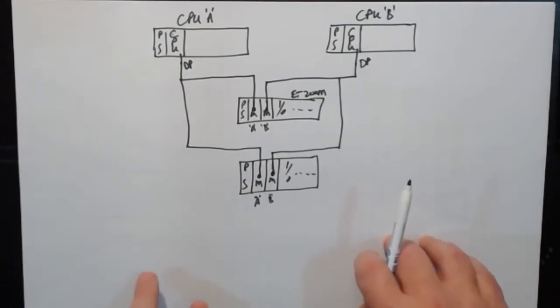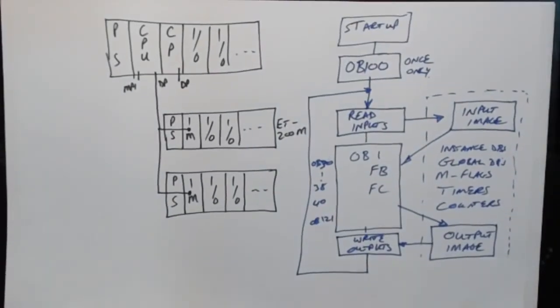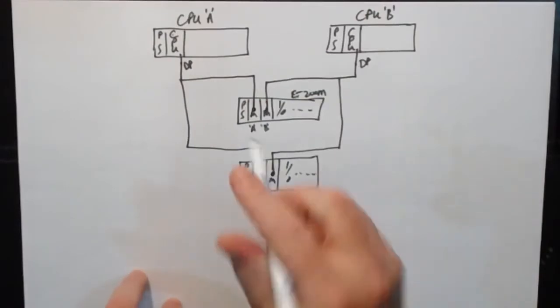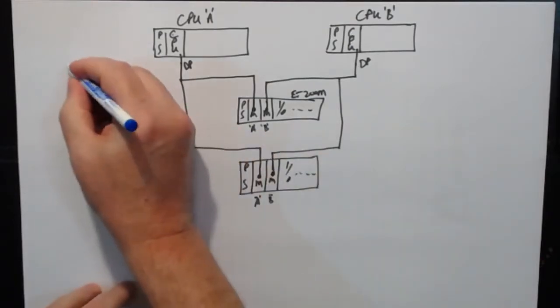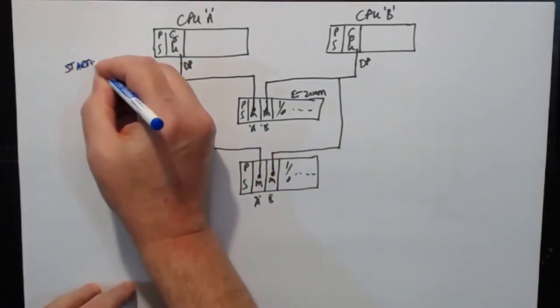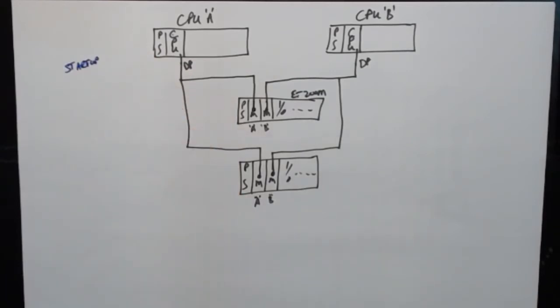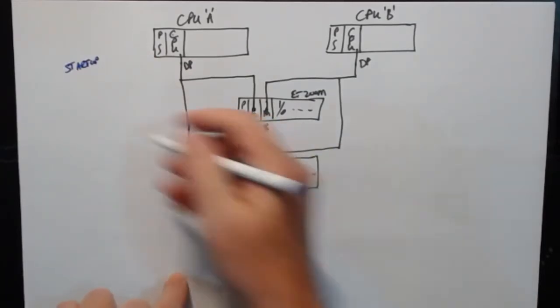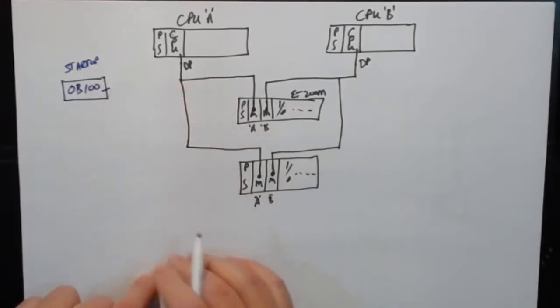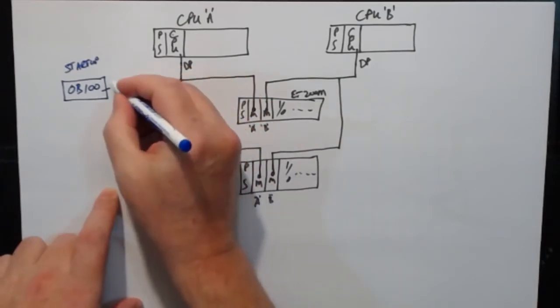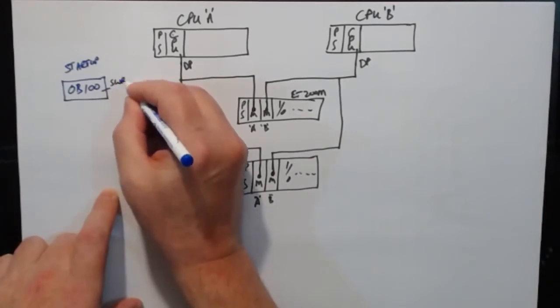Alright, let's take a look at the software. Software is very similar to the software you saw for the normal PLC. Let's change color. We run through the startup, then all the self-diagnostics and so on. Then it drops into OB100. And in OB100 we call a special function block supplied by the Siemens software redundancy, the Siemens SWR package. It's called SWRSTART.